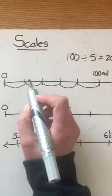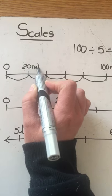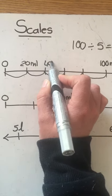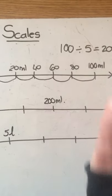That means each space represents 20. So this line would be 20 milliliters, then 40 milliliters, 60, 80 and then a hundred.